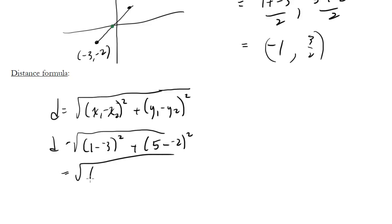So this becomes 4 squared, and this is 7 squared, so this is 16 and 49. Long story short, we get the square root of 65, which we can't reduce any further, but that's okay.